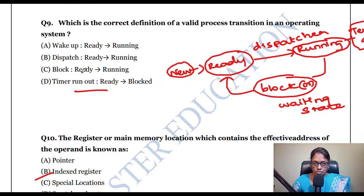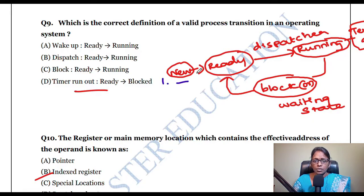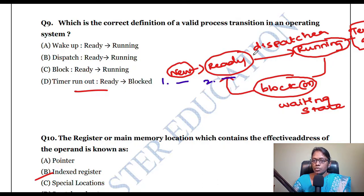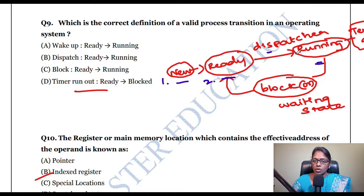Next question: which is the correct definition of a valid process transition in an OS? There are five states: new, ready, running, blocked/waiting, and terminated. For example, when a new student comes to college, they sit in the reception — that is the ready process. A dispatcher takes them to meet the principal — that represents the running process.